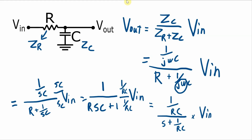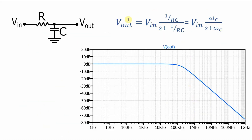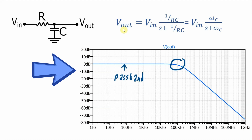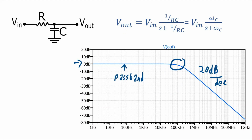We get an equation that looks like this. That term there is the cutoff frequency of the filter. Rewriting it to look a little bit nicer, in the frequency domain the response of this filter looks like this. Here's the passband. Here's the cutoff frequency. Then the magnitude decreases at a rate of 20 decibels per decade — meaning every decade change in frequency, the magnitude of the output voltage drops by 20 dB. Since this is a passive filter, we start with a gain of 1 and decrease from there. So this is a single-pole passive low-pass filter.